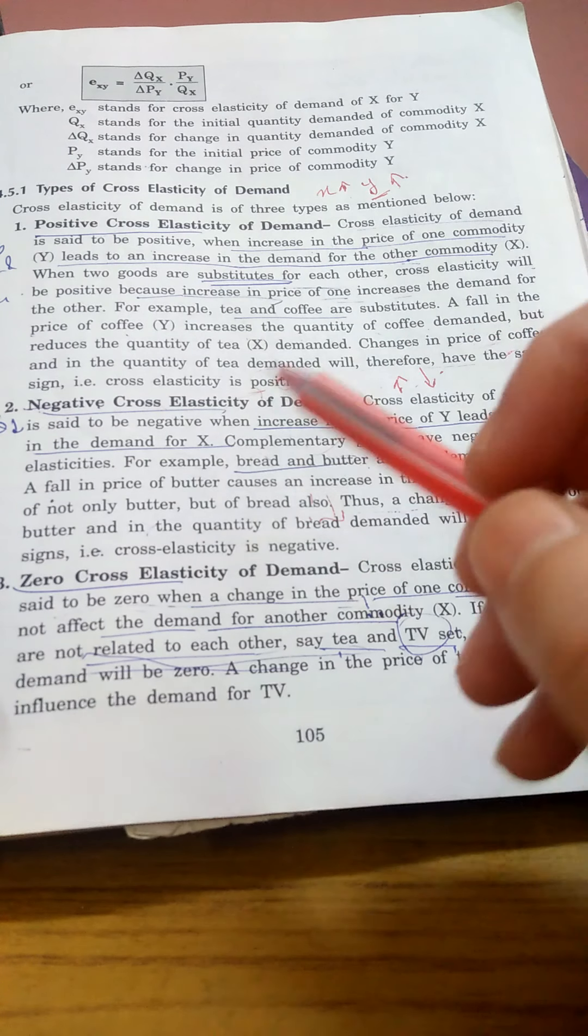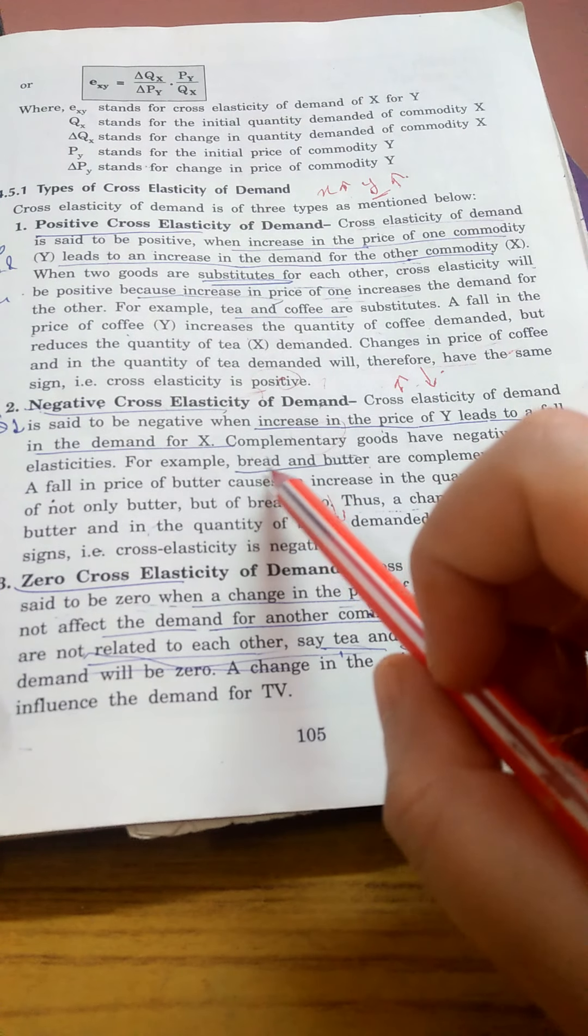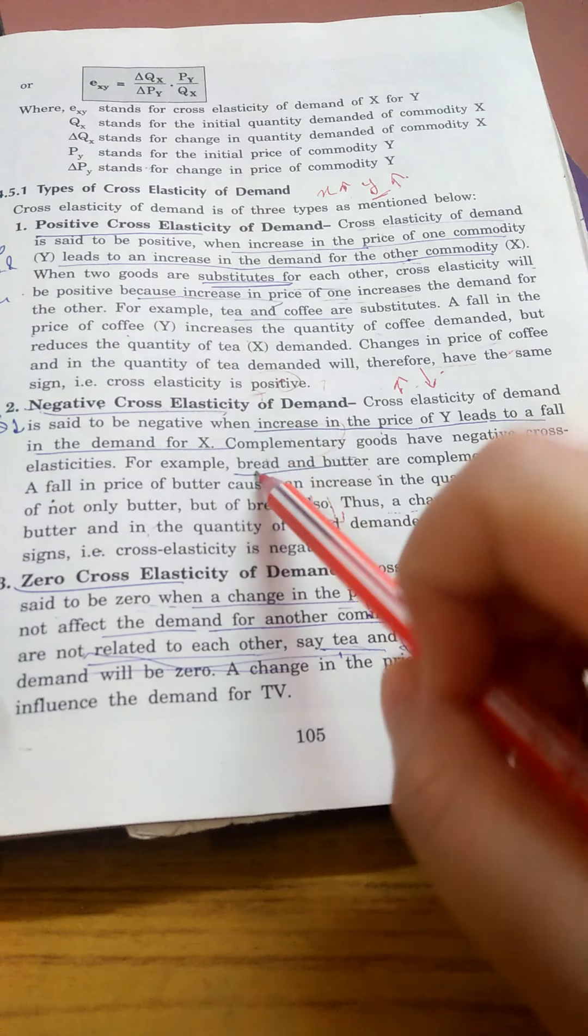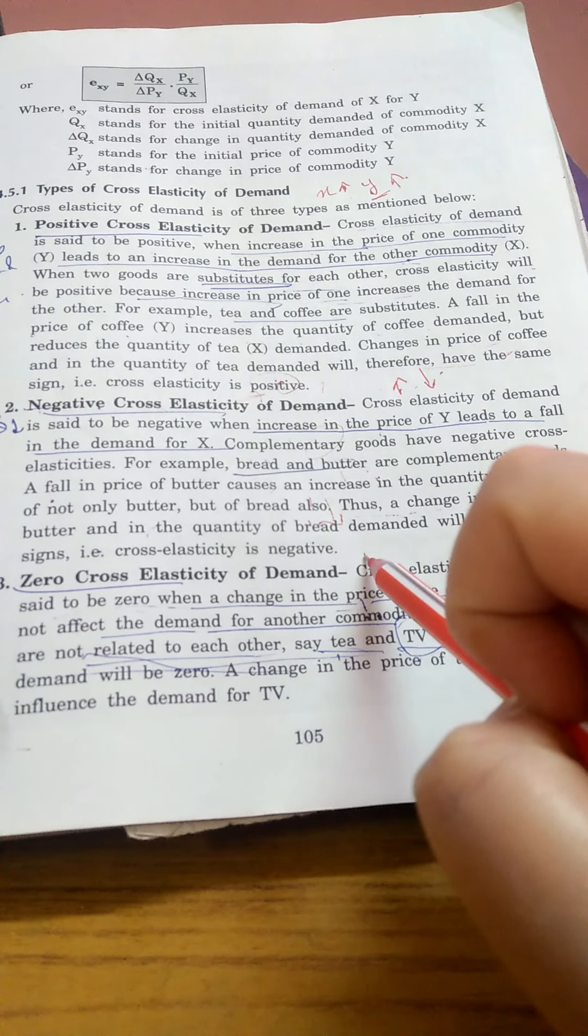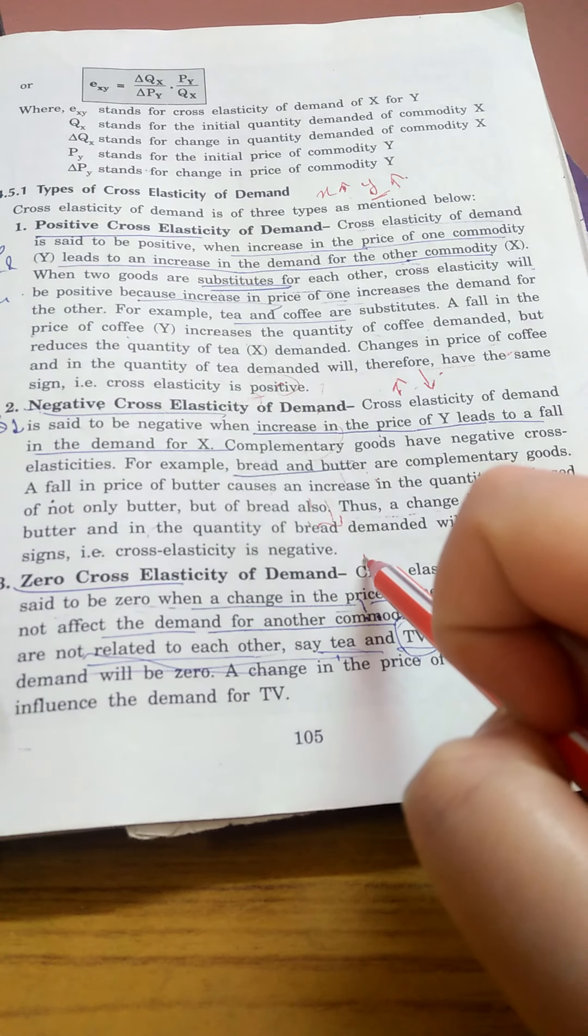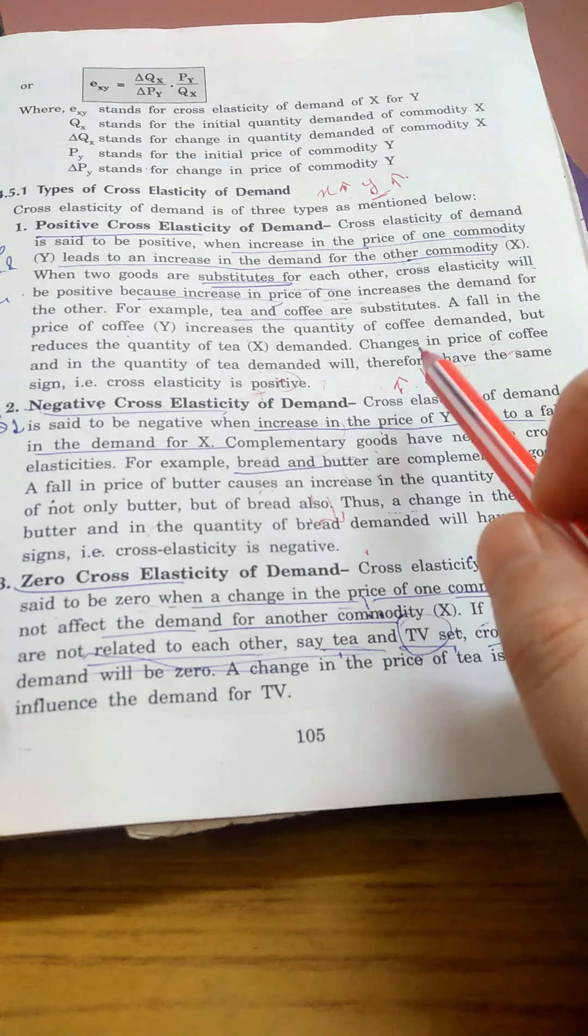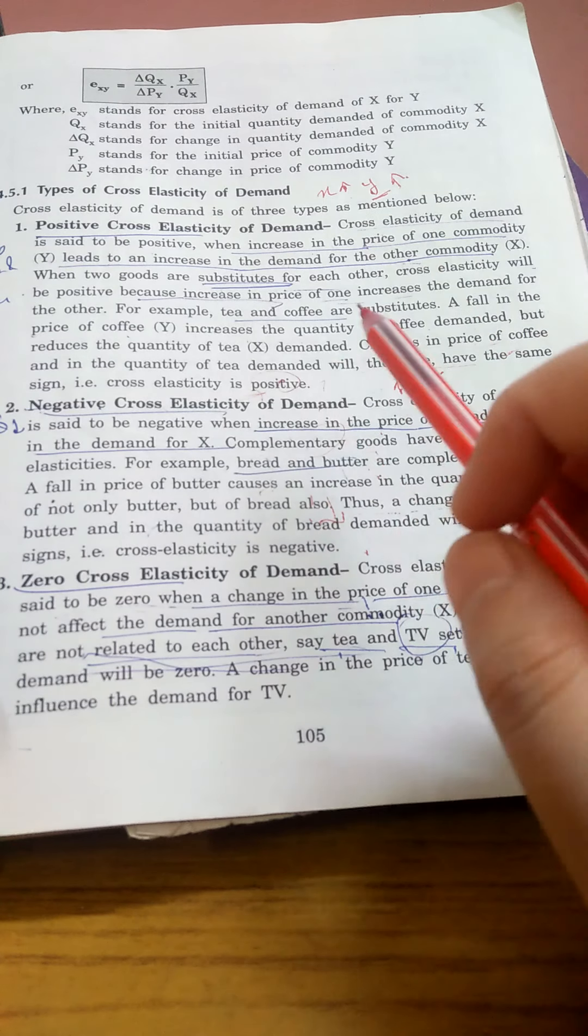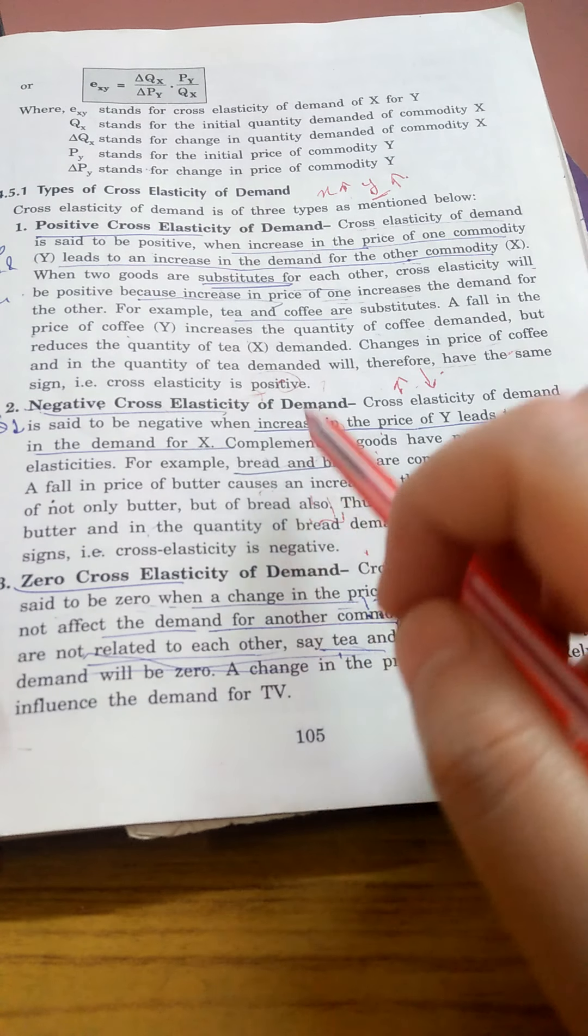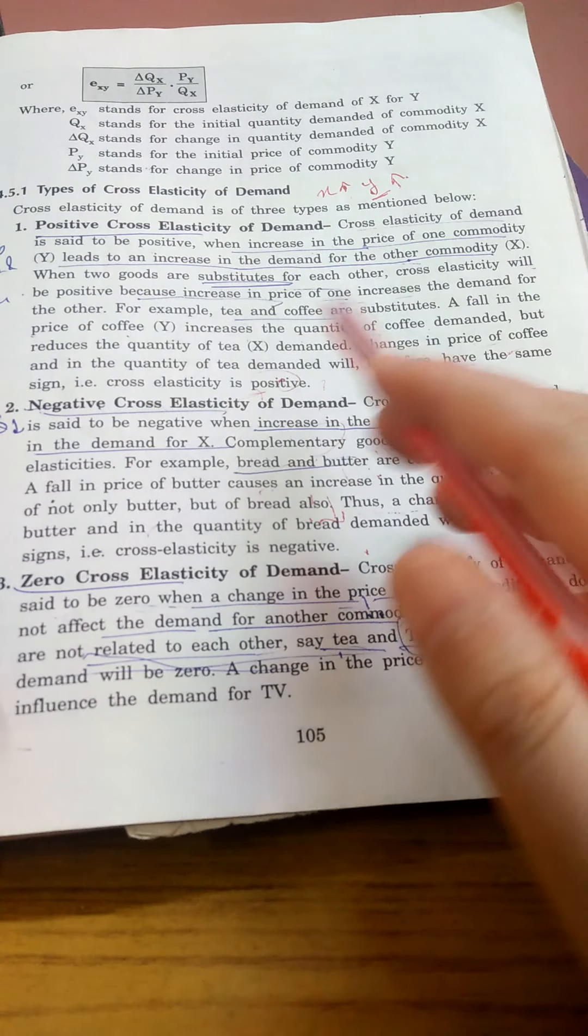Second example is bread and butter. If bread prices rise, butter demand will decrease. Third example is pen and ink. These are examples of complementary goods, so here there is negative cross elasticity of demand. Increase in the price of one will decrease the demand for another.